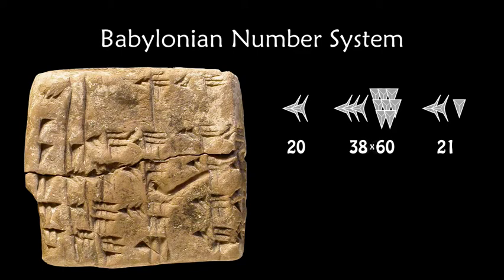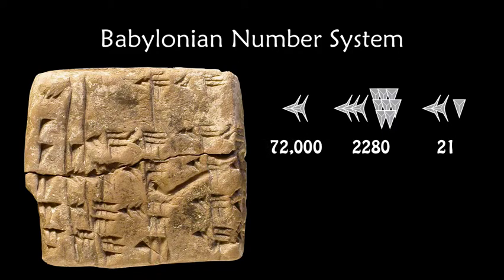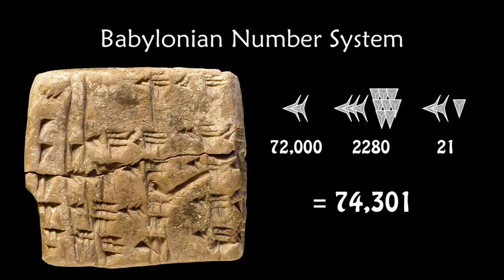So that's 21, plus 38 times 60 which is 2,280, plus 20 times 60 times 60 which is 72,000. So this number is 74,301. I'll leave you to Google the Babylonian number system to find out their major shortcoming and the problems it caused — they forgot to invent zero.